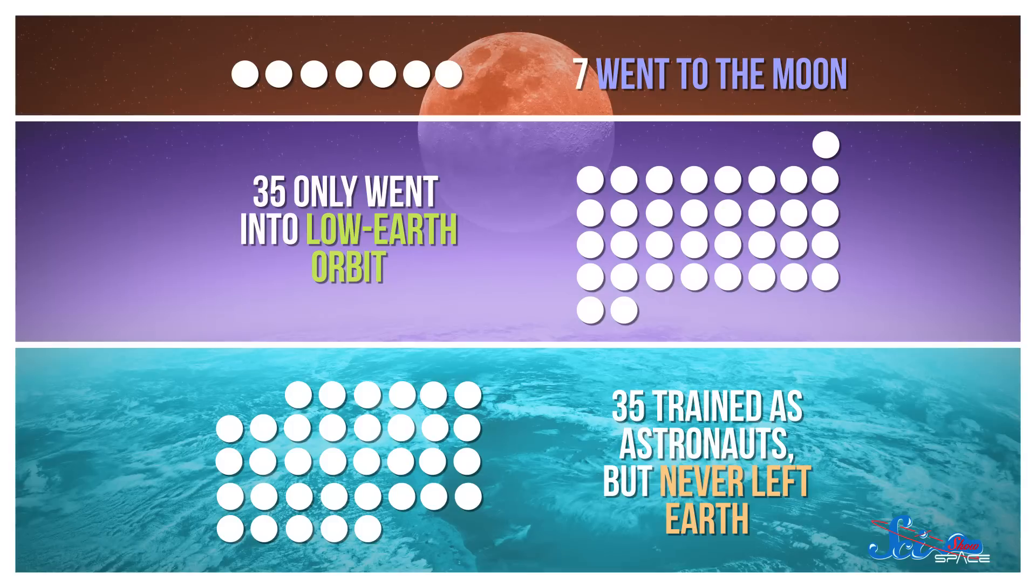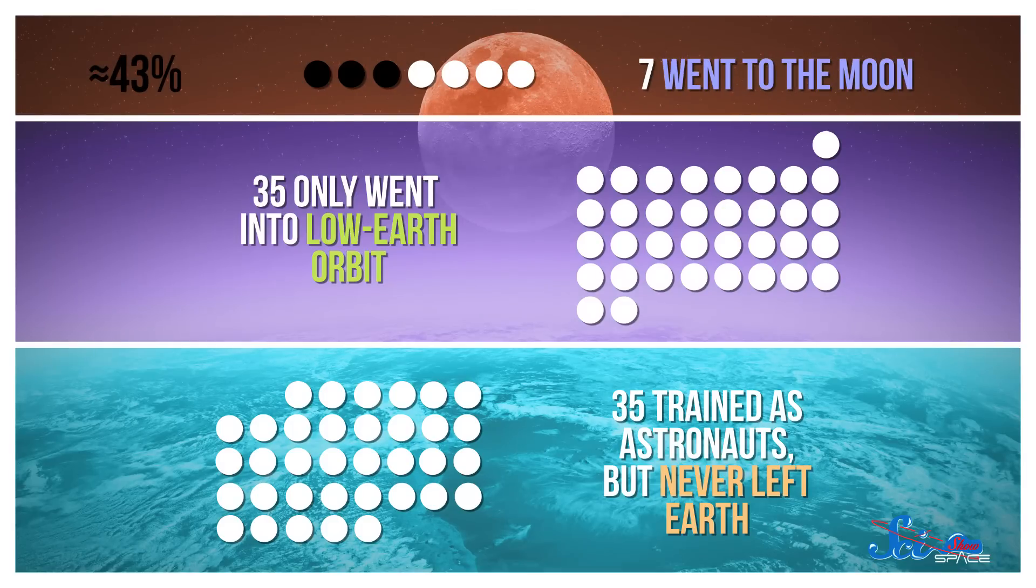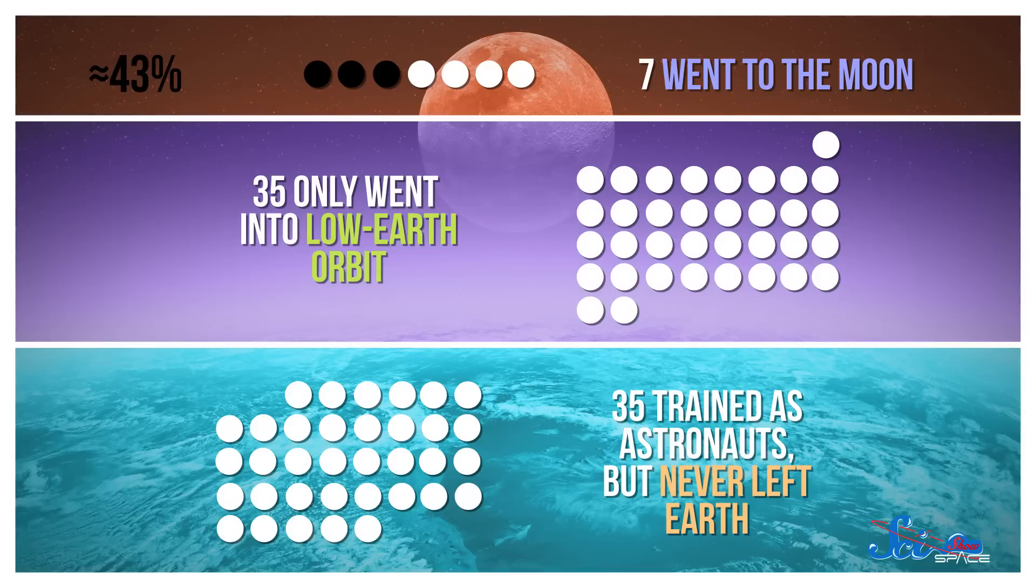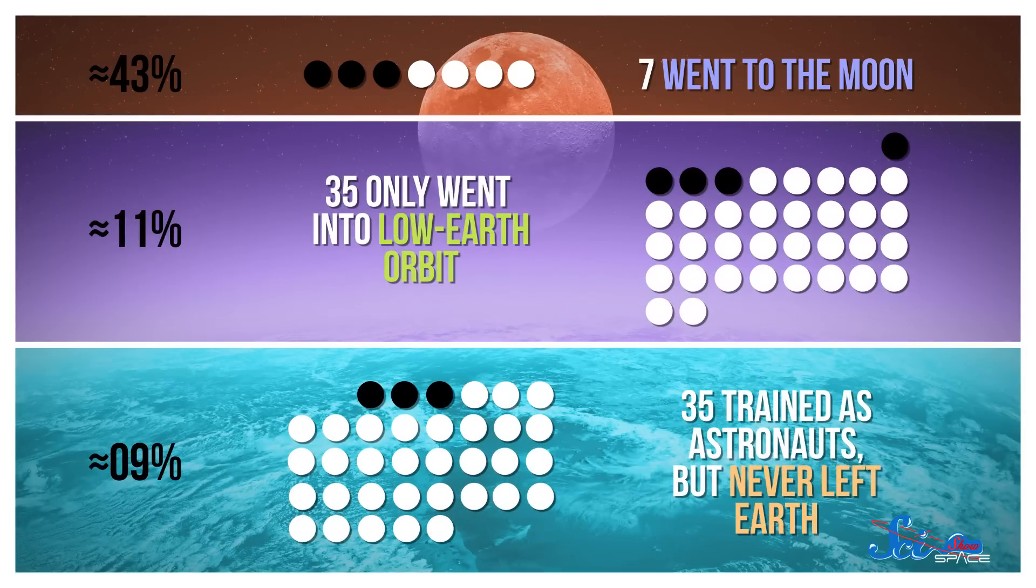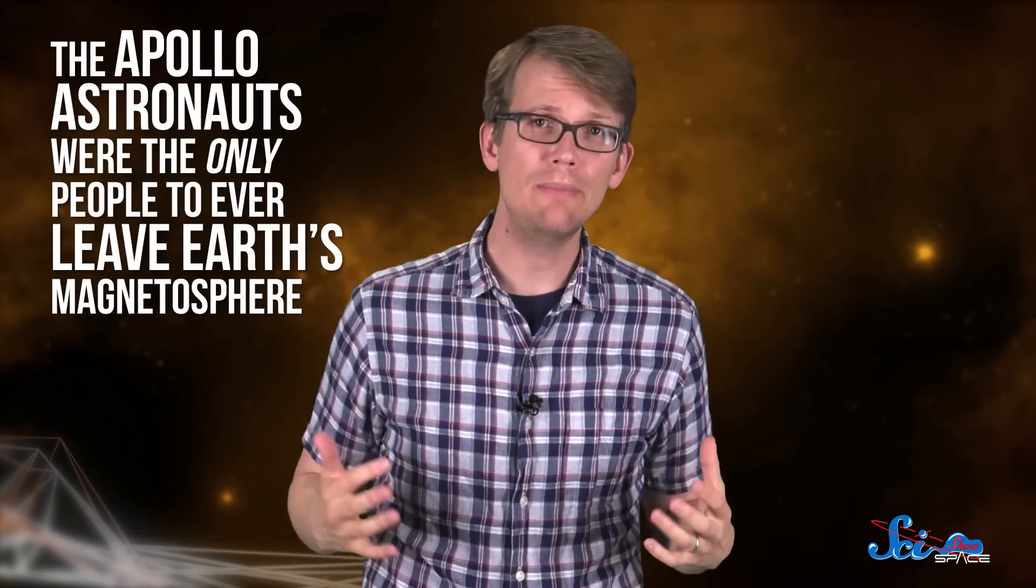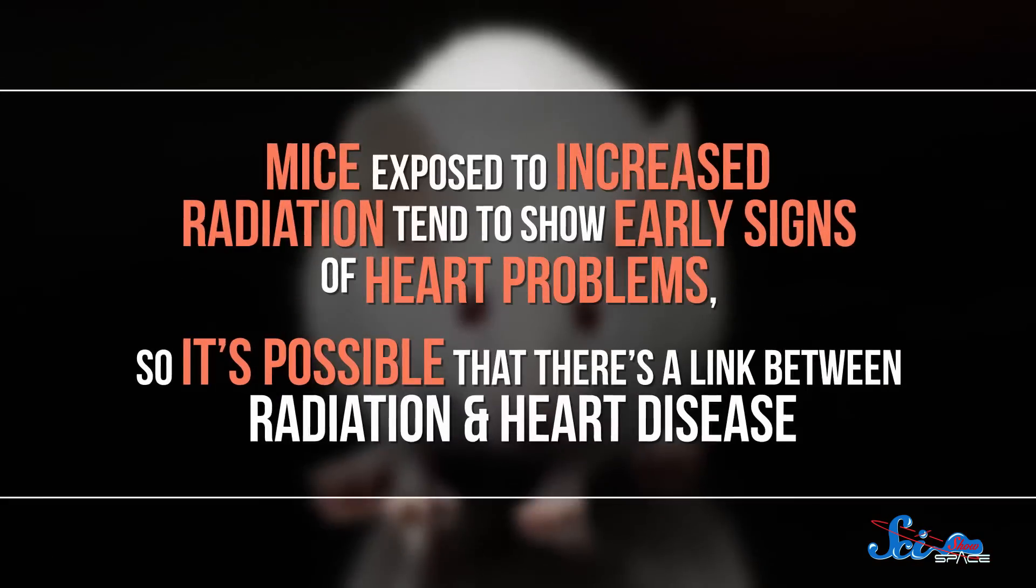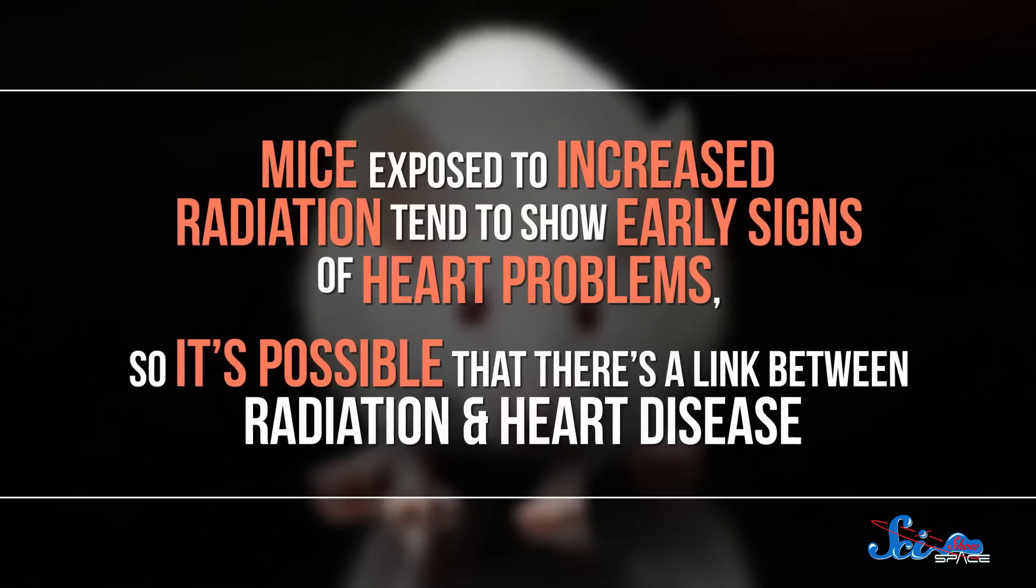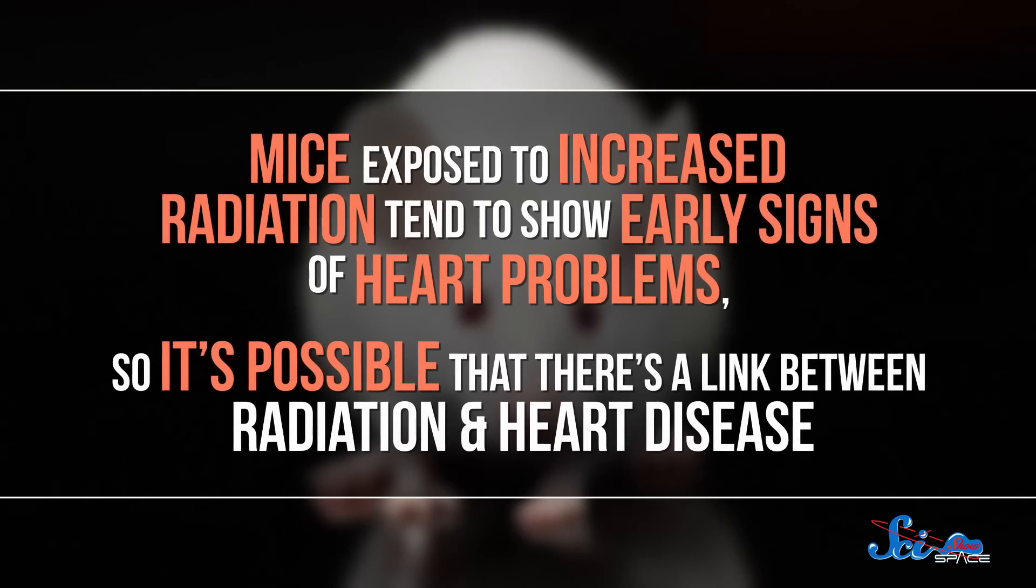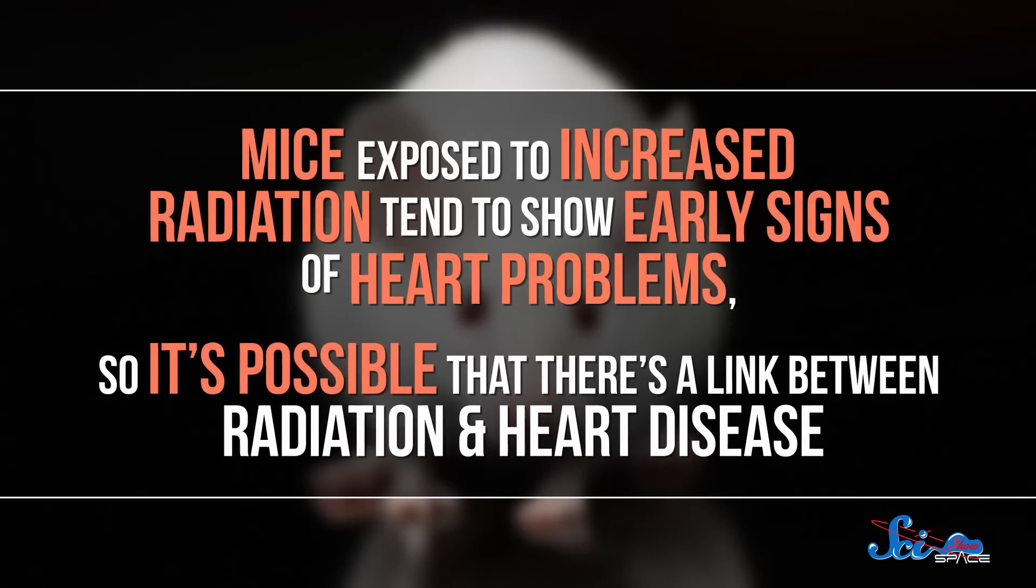On the surface, the results looked pretty grim. Forty-three percent of the Apollo astronauts died of heart disease, compared to only about ten percent of both of the other groups. There's a simple way to explain this huge difference. The Apollo astronauts were the only people ever to leave Earth's protective magnetosphere, which blocks out cosmic radiation long before it hits us. And mice exposed to increased radiation tend to show early signs of heart problems, so it's possible that there is a link between radiation and heart disease.